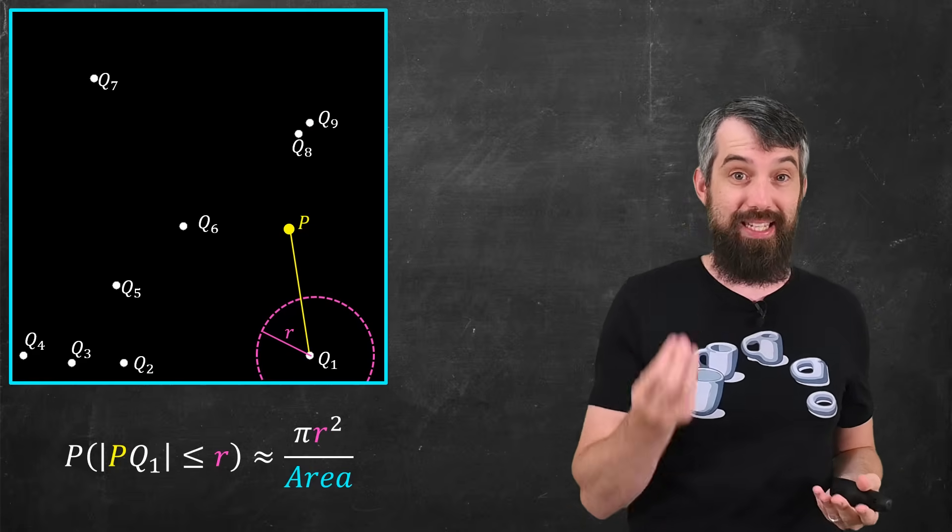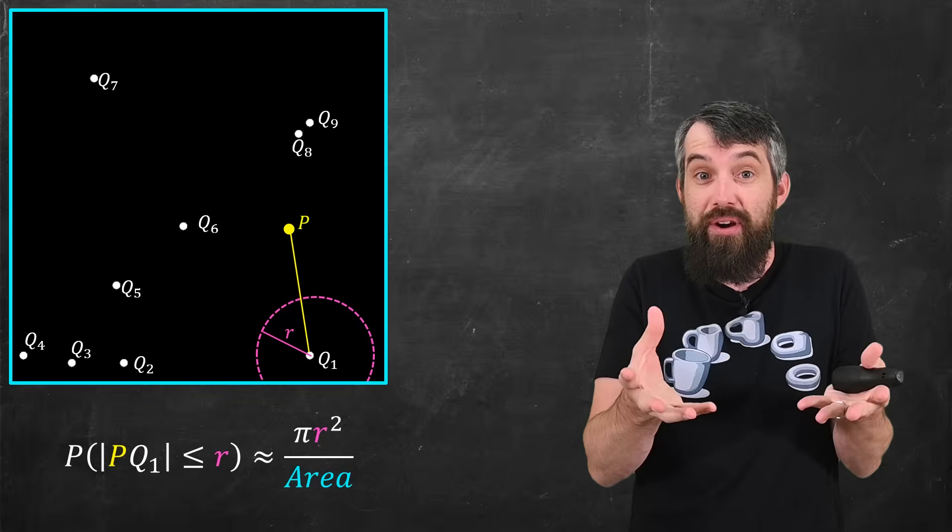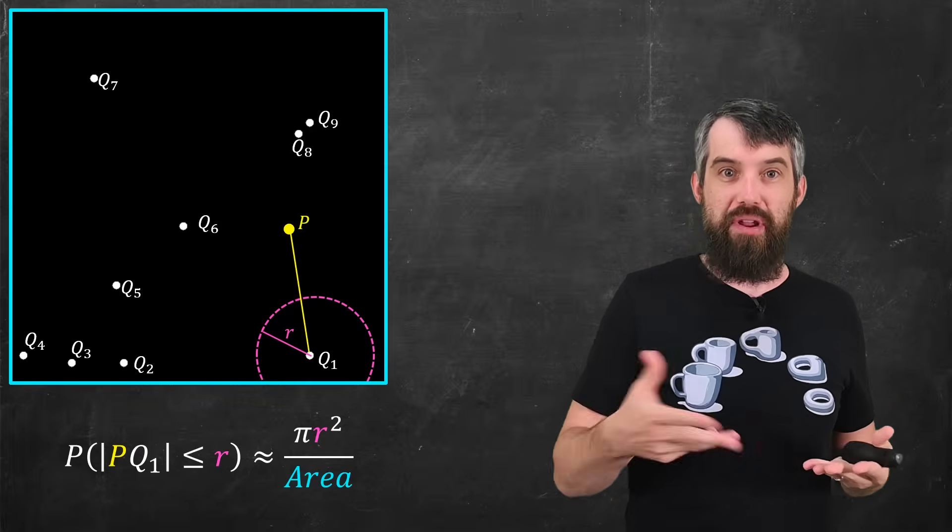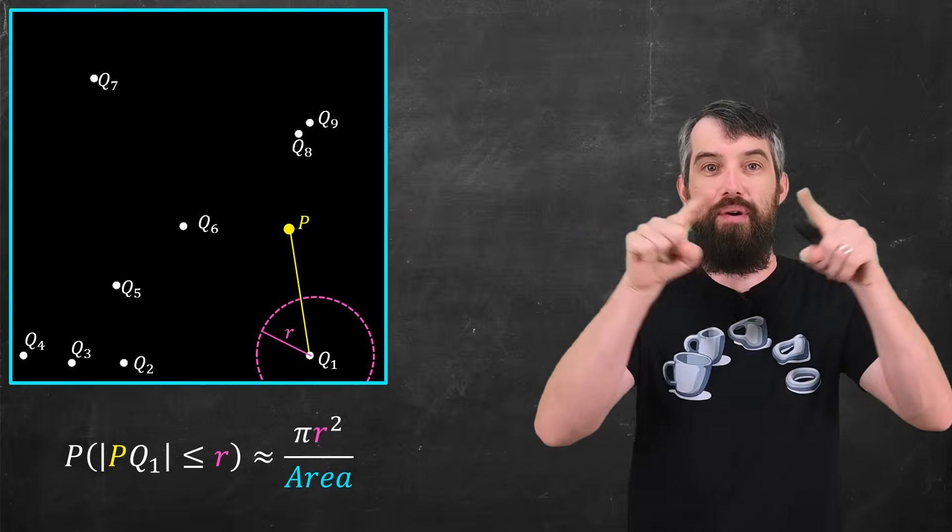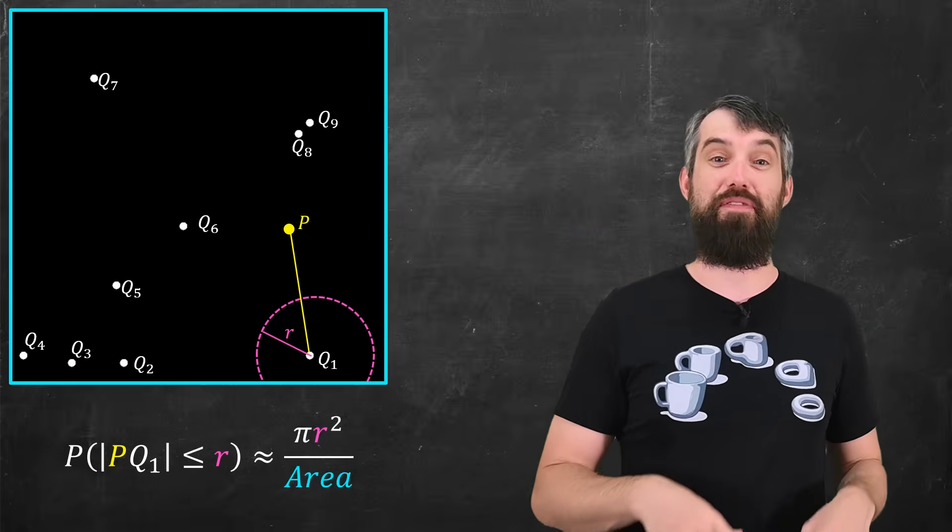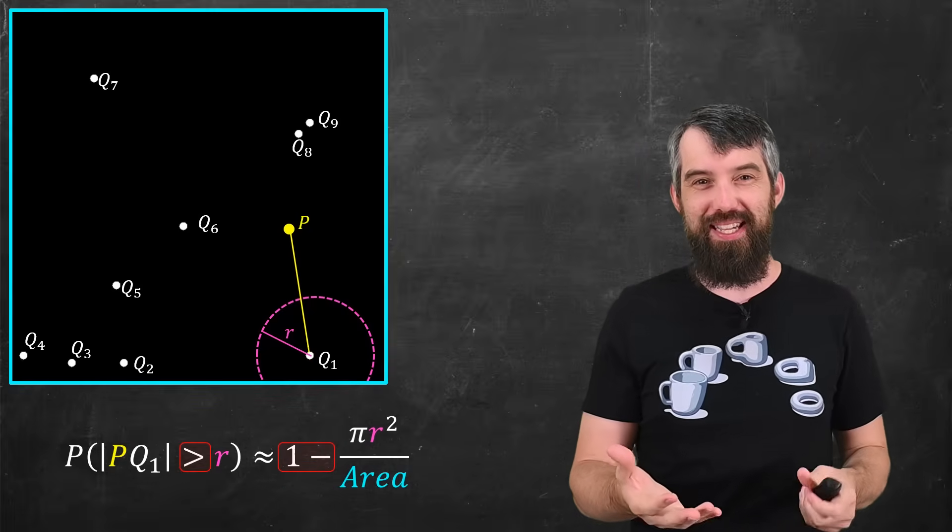And so I can just say, well, the probability that a point is inside that, it's just the fraction of the area inside of the circle divided by everything. So pi R squared is the area of a circle, then divided by the total area of my big region. Okay, tiny little trick, if the probability of being less than or equal to R is this, the probability of being bigger than R is just 1 minus that.